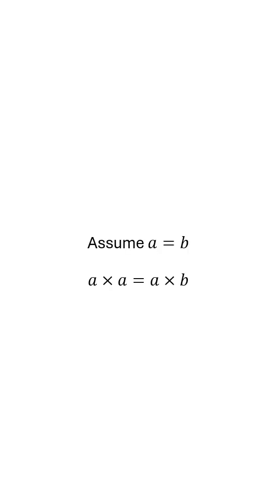Assume a is equal to b. We begin with a simple equation a times a equals a times b. Fair enough, right? Well, that becomes a squared equals ab.